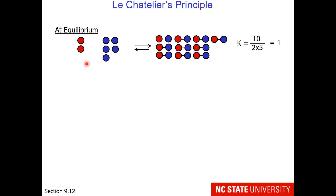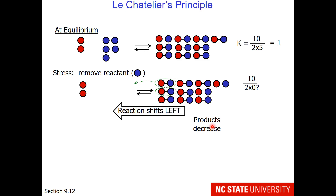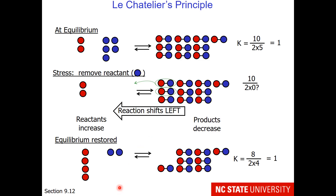Here is another scenario. My equilibrium constant is still 1. We are still working with the same reaction in which red and blue make a covalent bond. This time my stress is going to be to remove reactant — I'm going to remove all 5 blue spheres. When you remove something, it's kind of like pulling. I have removed something from the left side. In response, the reaction shifts to the left, which means I'm going to decrease my product and break apart 2 compounds, increasing my reactants.